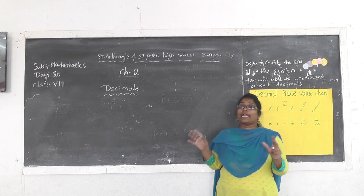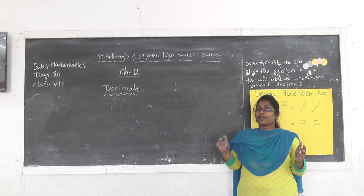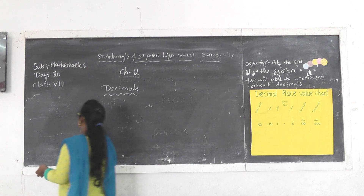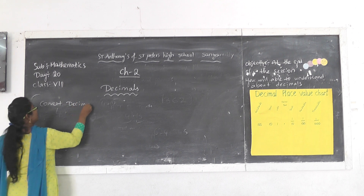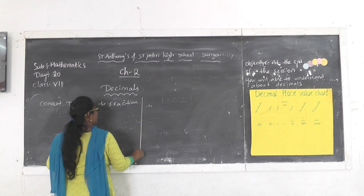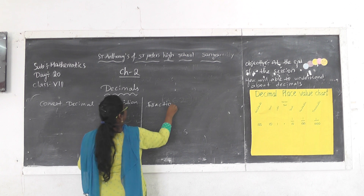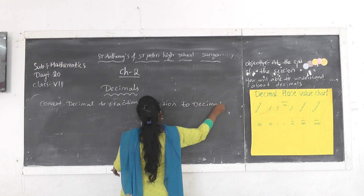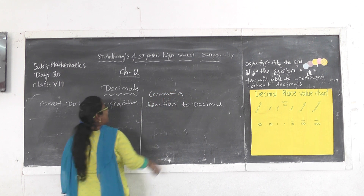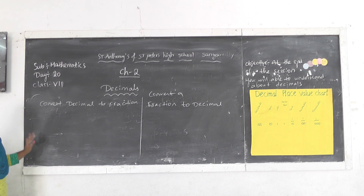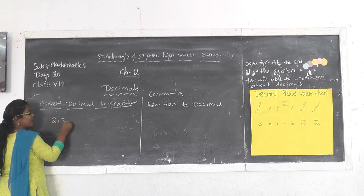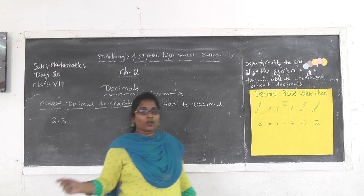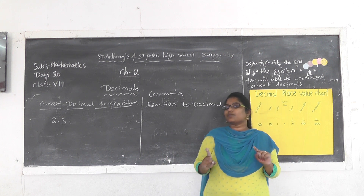Now let me explain how to convert a decimal number into a fraction and how to convert a fraction into a decimal. For example, convert decimal to fraction. Let me take the decimal number 2.3. Is it a decimal number? Yes, 2.3 is a decimal number. Now how do we convert this decimal number into a fraction?